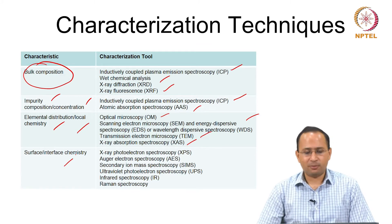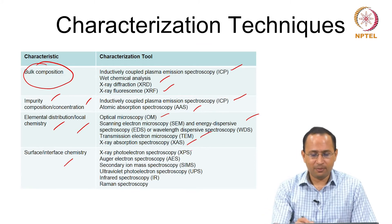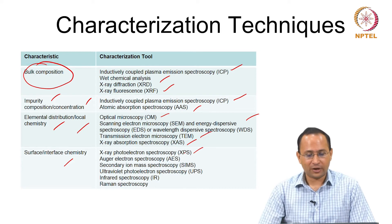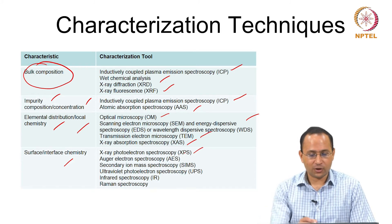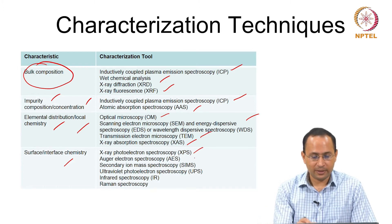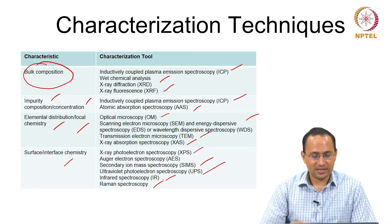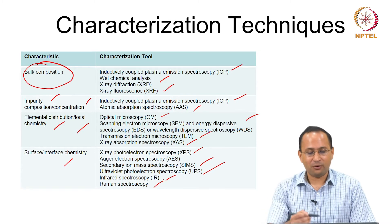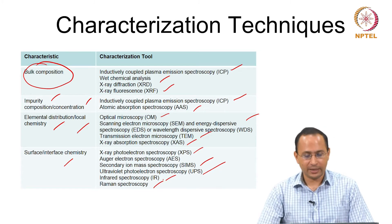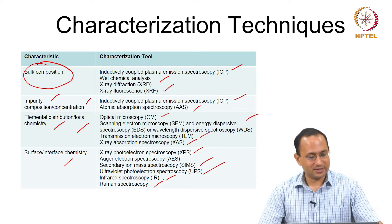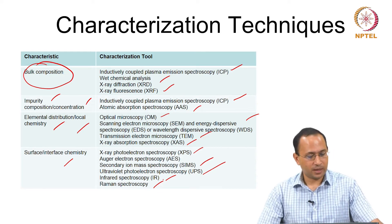Surface and interface chemistry can be understood by X-ray photoelectron spectroscopy, Auger electron spectroscopy, secondary ion mass spectroscopy, ultraviolet photoelectron spectroscopy, infrared spectroscopy, and Raman spectroscopy. There are various spectroscopic techniques which we can use to determine the surface and interface chemistry.